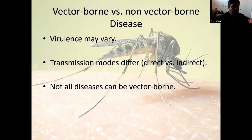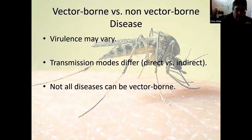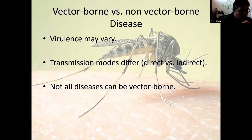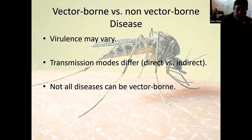I wanted to differentiate between the idea of vector-borne versus non-vector-borne diseases. We've all heard about COVID-19 right now, so that may be in the forefront of people's minds, but there are some very clear and strong differences between vector-borne diseases and non-vector-borne. With vector-borne diseases, they have to be transmitted by an intermediary — in many cases some sort of arthropod, oftentimes a tick or mosquito, or a flea.